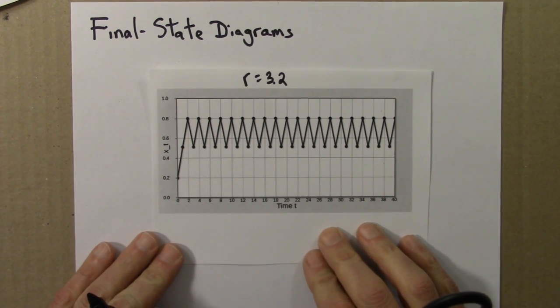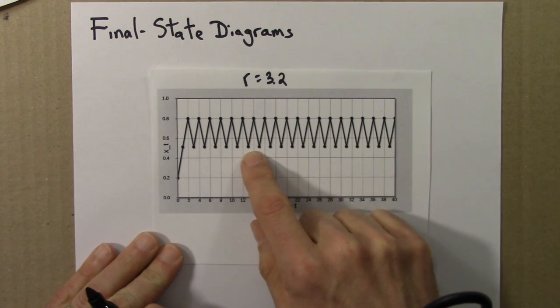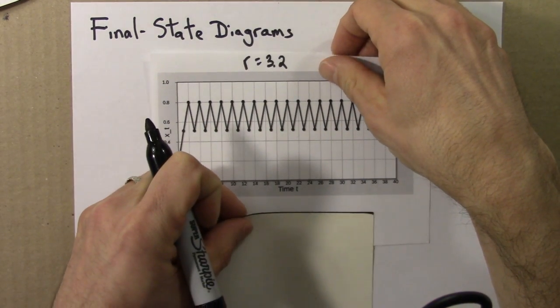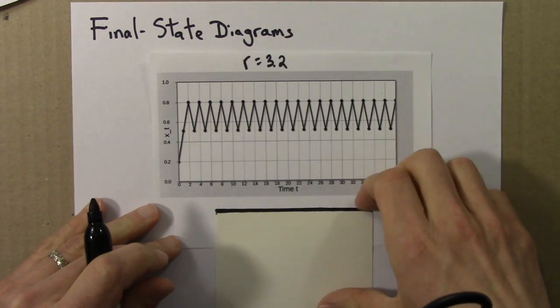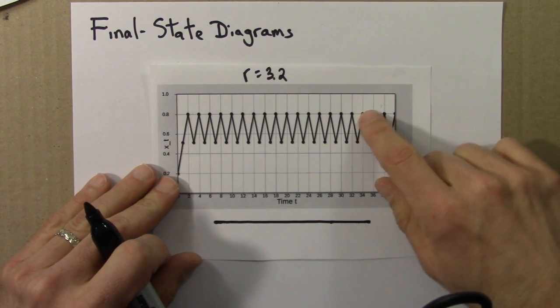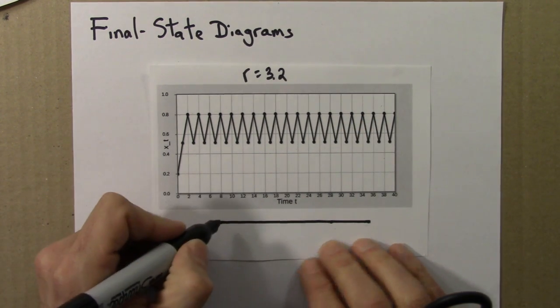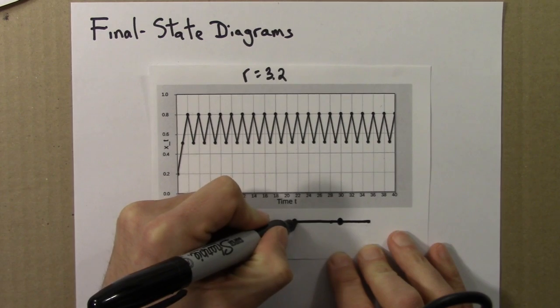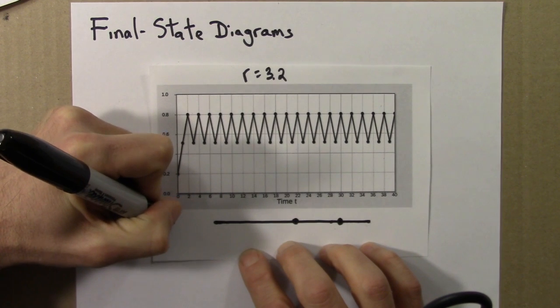Let's do the same thing for R equals 3.2. Here there's a cycle between 0.8 and 0.55 or so. So let me draw the line for the final state diagram. There it is. And this time I've got the two final state values, 0.8 and 0.55. So I'll draw these halfway and a little bit more. And then maybe there. So those might be my two values. This is R equals 3.2.